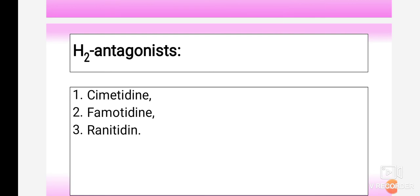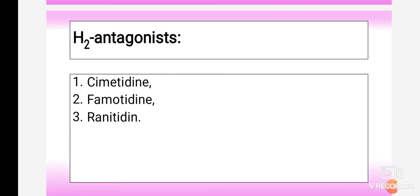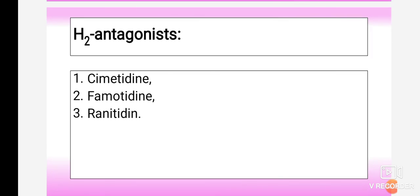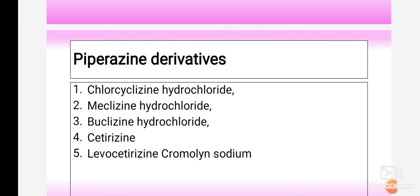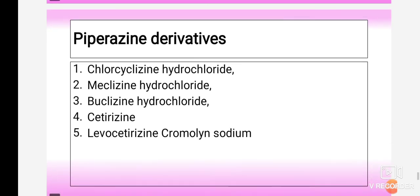Under H2 antagonist class, the three important drugs are cimetidine, famotidine, and ranitidine. These bind to H2 receptors on the parietal cells of the stomach lining and decrease histamine-induced gastric acid production, reducing the severity of gastrointestinal diseases. In the next lecture we will discuss each chemical class in detail: mechanism of action, structure, structure-activity relationships, side effects, and metabolism of each drug.